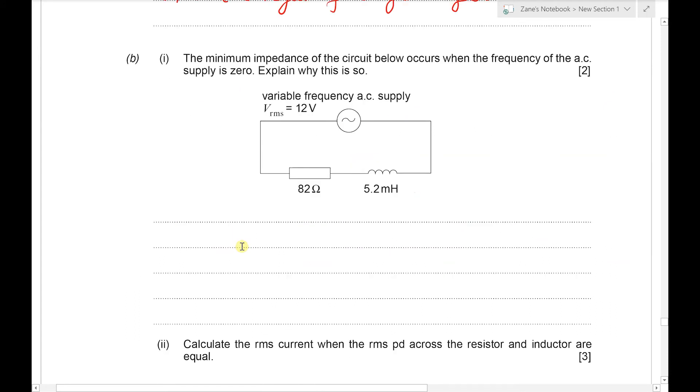Next we've got the minimum impedance of the circuit below occurs when the frequency of the AC supply is zero and explain why this is so. Well the formula for the impedance of the circuit is Z equals the square root of R² plus X_L². X_L is ωL or 2πFL, so when F is zero then X_L will be zero.